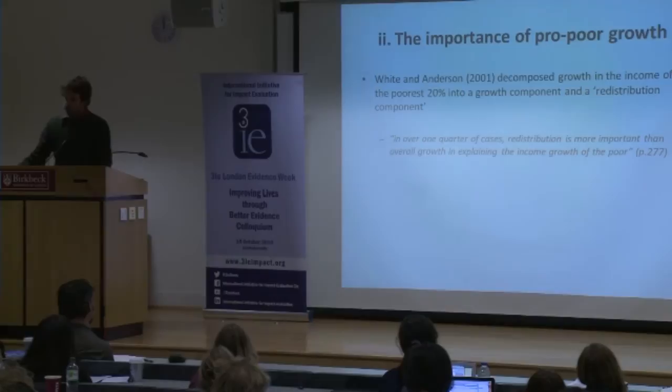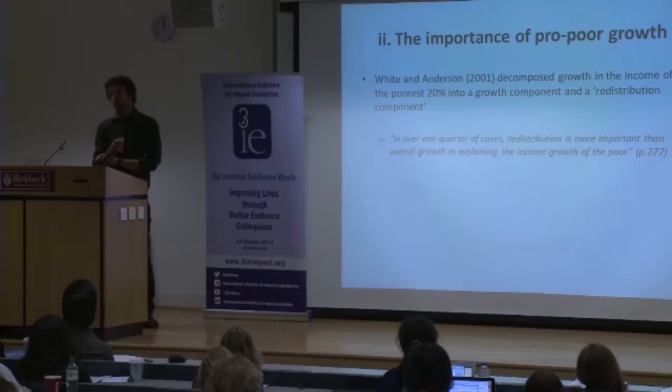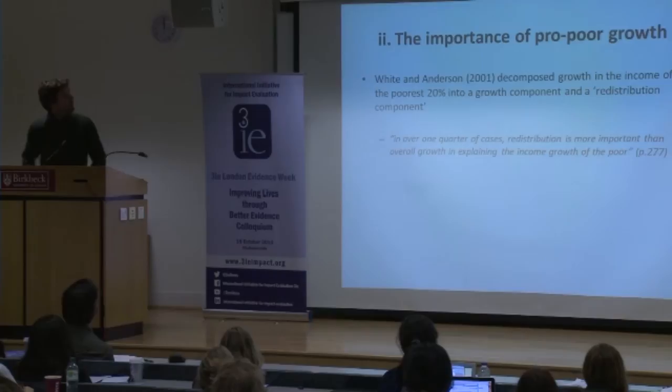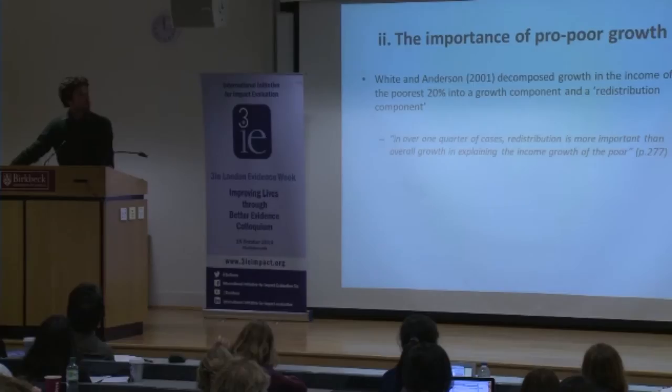Our central message was that growth is the most important driver, but redistribution is still a significant factor — certainly non-negligible. In particular, we showed that in over a quarter of cases, redistribution is actually more important than growth in average incomes in explaining why the incomes of the poorest 20% are rising. Looking back, I think subsequent research has actually backed us up on this point.